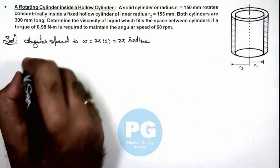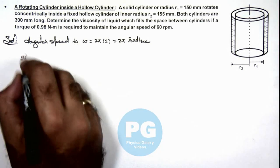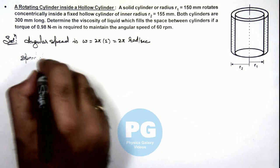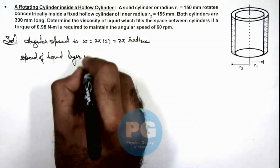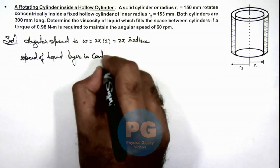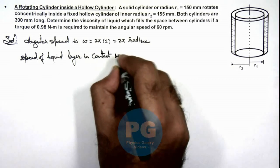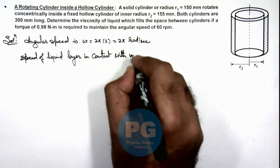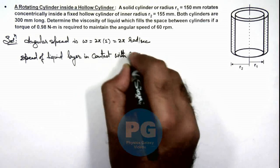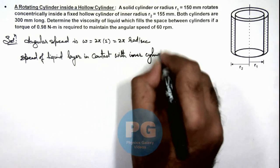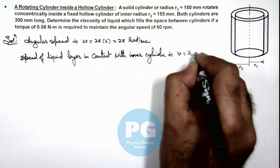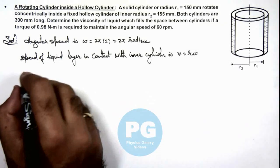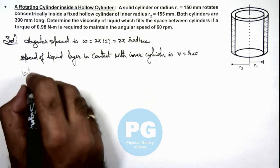So here we can write the speed of liquid layer in contact with inner cylinder is... this velocity gradient dv by dx will be r1 omega, so we can easily calculate the velocity gradient.